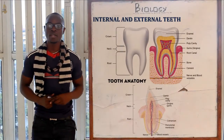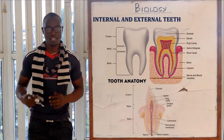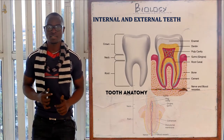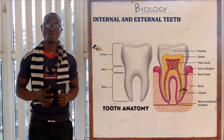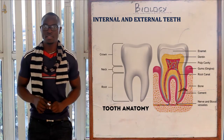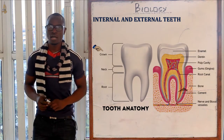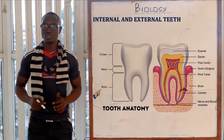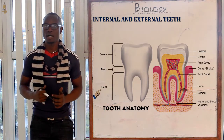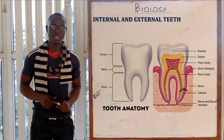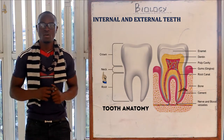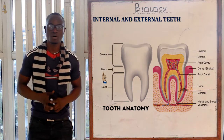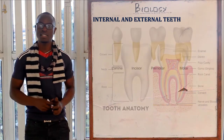Welcome to this class. Today we look at the external and internal structures of the teeth. Mammalian teeth have three main zones: the crown, which is the portion above the gum; the roots, which is the portion below the gums and is mainly covered by the cement; and lastly the neck, which is the region between the crown and the root.